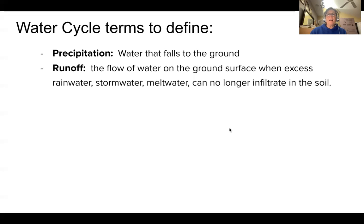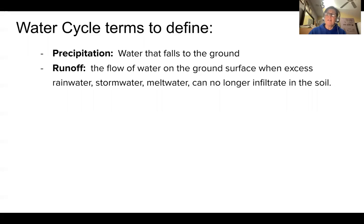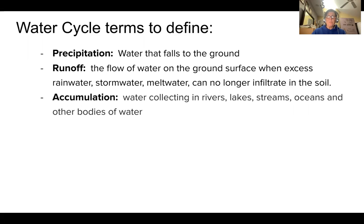Runoff is the flow of water on the ground surface when there's excess rainwater. We build drain storms, gutters, and sewers around that concept. When the soil is full — as we've seen in the last few years with heavy rain — we get runoff that eventually leads into a body of water: a creek, a river, a lake, and eventually the ocean. Accumulation is where that runoff water collects, in those bodies of water.